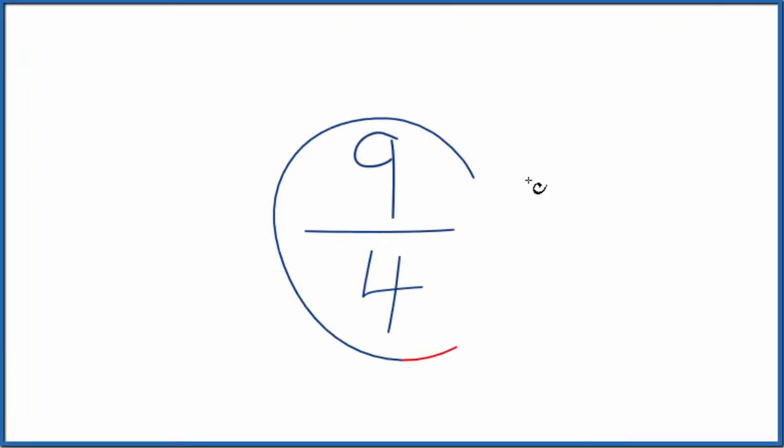Let's write the fraction 9 fourths as a mixed number. So to do this, what we can do is divide four into nine.